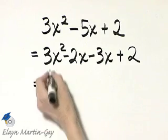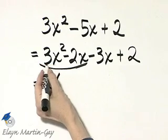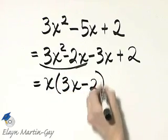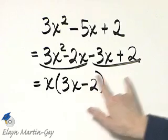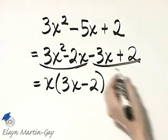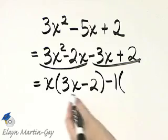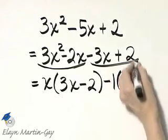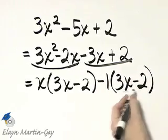And now let's factor by grouping. Here there's a common factor of x. When I factor it out, I have 3x minus 2. Look at these two terms and keep in mind that I want this factor left over when I factor something out of these two terms. There's really no common factor, but I will factor out a negative 1 so that what's left looks like this binomial. Negative 3x divided by negative 1, that's positive 3x. And 2 divided by negative 1, that's minus 2.